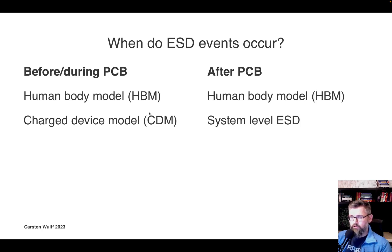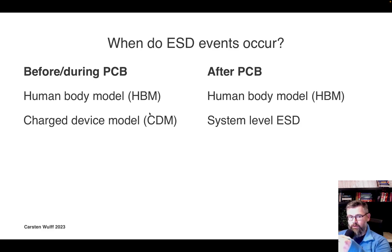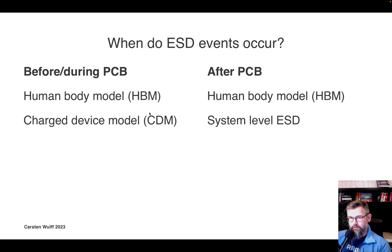There is also something called a charged device model. These try to model two different phenomena. One is electrostatic discharge that happens because somebody is touching your chip — that is the human body model. The charged device model tries to simulate what happens if you have a chip in a strong electric field, for example on a production line going through a reflow station. Maybe there's a plexiglass window that gets charged over time, and when the chip is in this strong field it will redistribute charges inside to cancel that field. But we'll focus on human body model today.